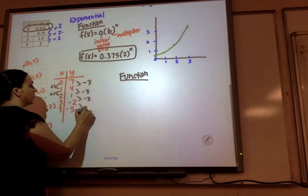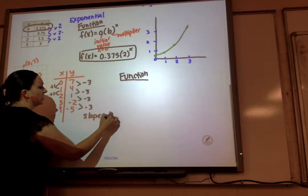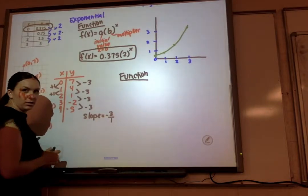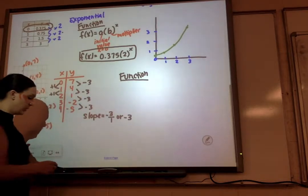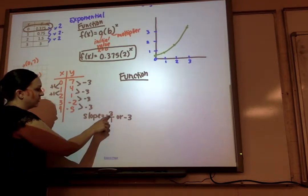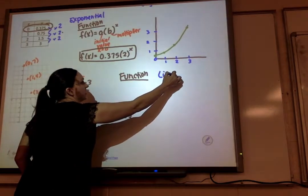So these numbers give me my slope, which is negative 3 over 1, or just negative 3. Because I'm subtracting, I know my function is linear.